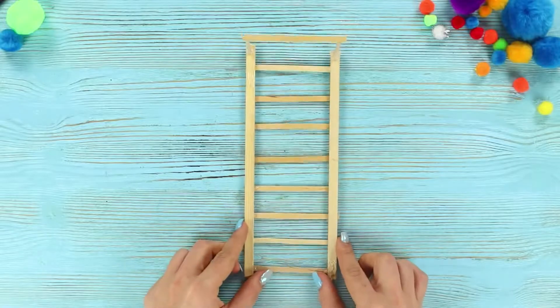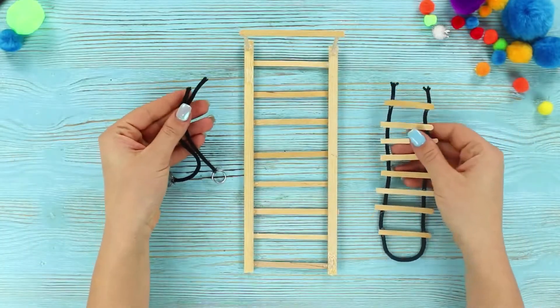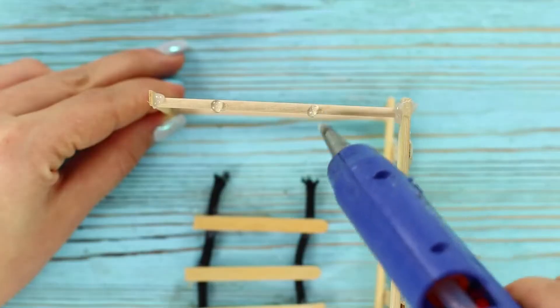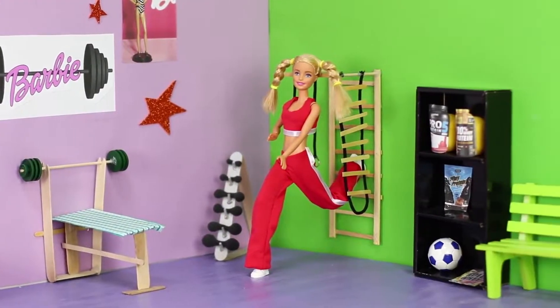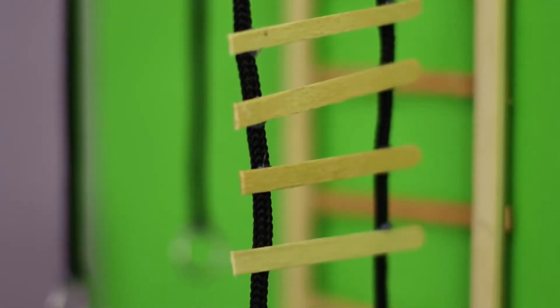Put the sports area together. Glue the stairs and rings on both sides of the horizontal bar. A wall bar setup is ready! You can start exercising!